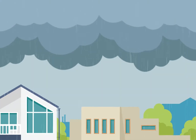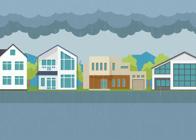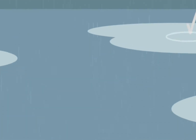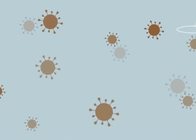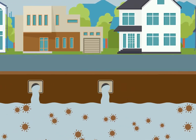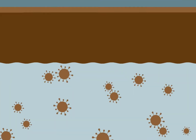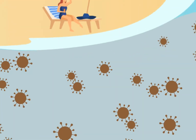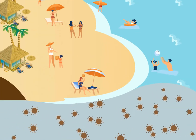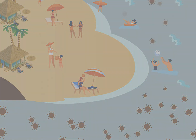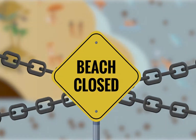When it rains, water flows across the ground and picks up pollutants. Elevated bacterial levels in these pollutants can then cause beach closings or swimming advisories. If these elevated bacterial levels are not addressed, it can degrade the beach's natural setting, destroy wildlife, and endanger public health.